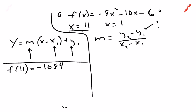That's our first y value, paired with x equals 11. Now I'll do f of 1 the same way — plugging into the original equation: negative 8 times 1 squared minus 10 times 1 minus 6. That gives us negative 24. So our two coordinate pairs are (11, -1084) and (1, -24).